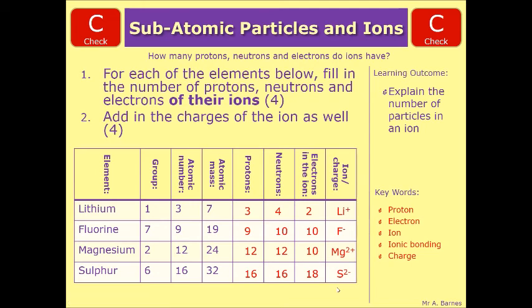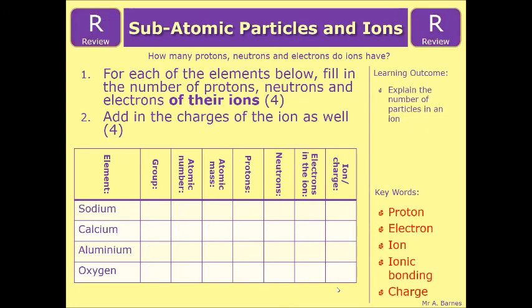See how you did? If you're not sure, go back and watch the video again. If not, then move on to the review section, which is a very similar question. Except this time I've asked you to do 4 different elements: sodium, calcium, aluminium, oxygen. And this time you'll have to find out the atomic number, atomic mass and the group yourself by looking at the periodic table. That ends this video.